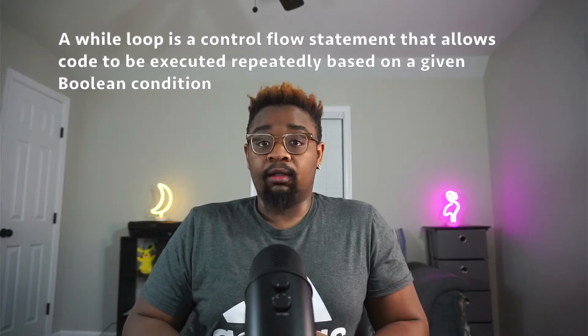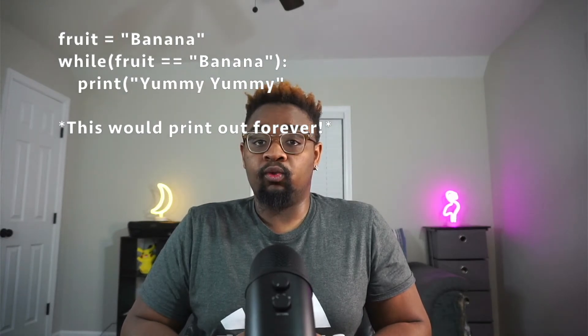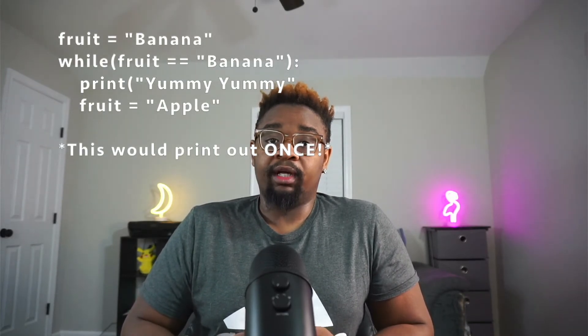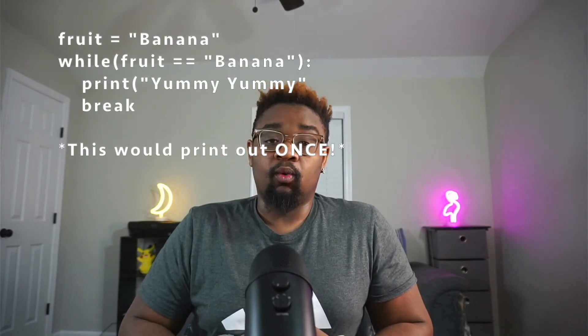A while loop is very simple — it does something while a condition is true. A condition is a true or false statement. So I could say: while fruit equals equals banana — note that double equals is a comparator, as compared to single equals which is how you set a variable. We can print out 'yummy yummy' and that would print out forever because nothing has changed. But if we changed fruit to apple, it would stop printing because the condition is no longer true. Similarly, if we put the word break, the while loop would stop. So a while loop just does something until the condition isn't met anymore, and will go infinitely if the condition stays true.